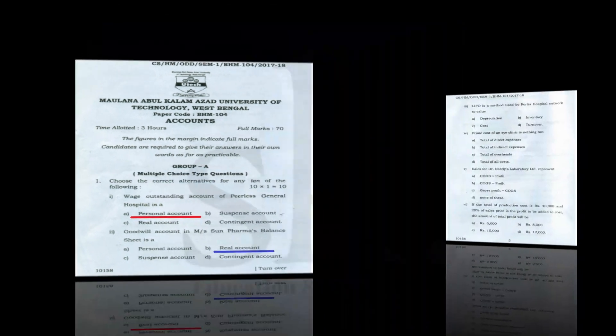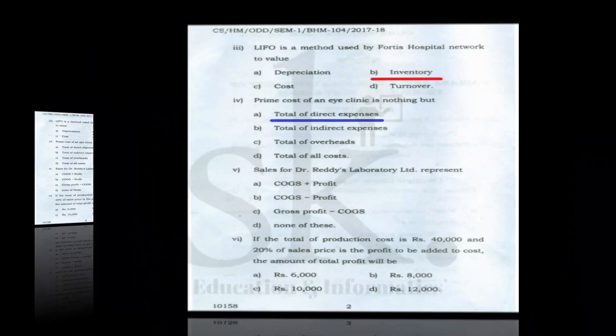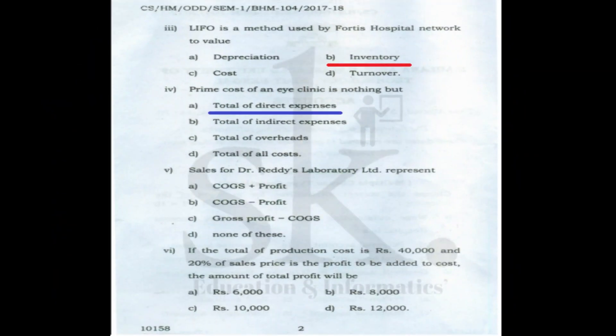Question number three: LIFO is a method used by Fortis Hospital Network to value inventory, so the correct option is B. Question number four: prime cost of an eye clinic is the total of direct expenses of that organization.